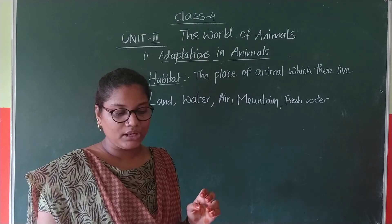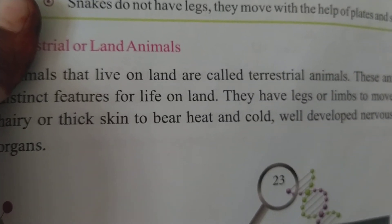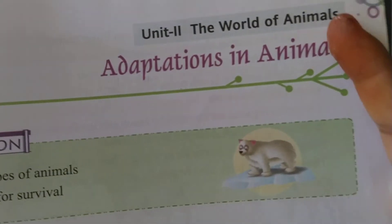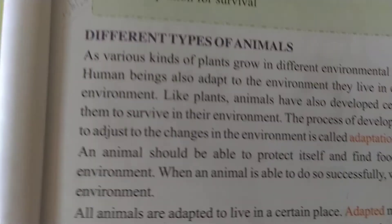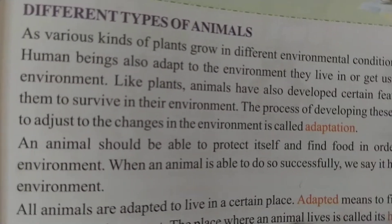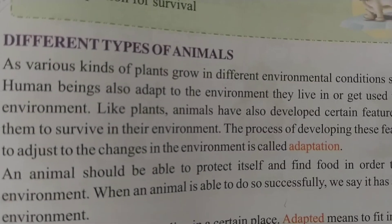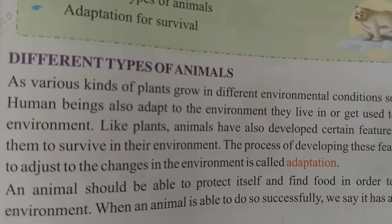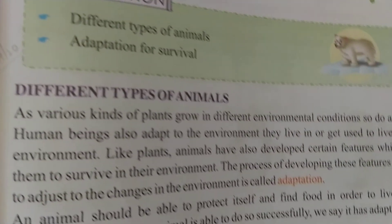We know page number 23. Second unit: the world of animals, adaptation in animals. Different types of animals — first paragraph. Watch the video, find out the words. Repeat it two or three times and choose the words.